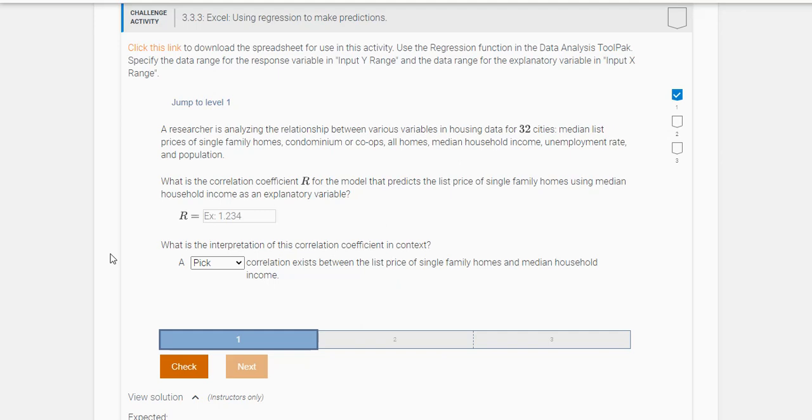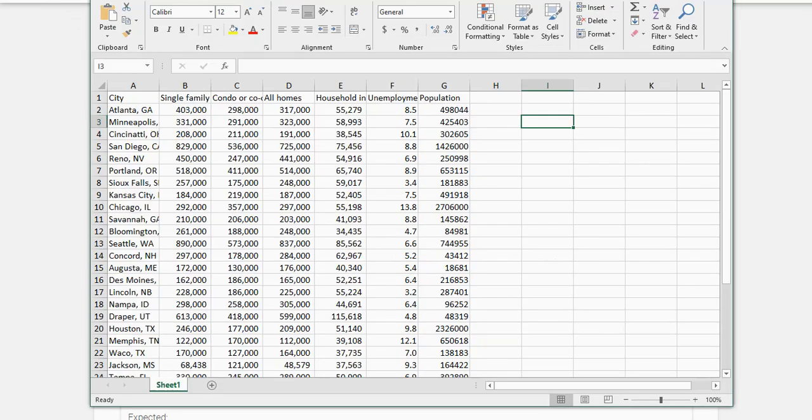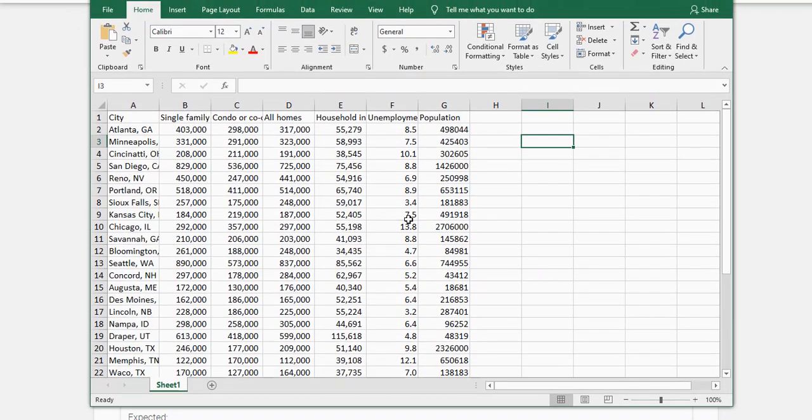The first one says click this link to download the spreadsheet for this activity. So I'm going to click this link and you're going to get an Excel spreadsheet that looks roughly like this.